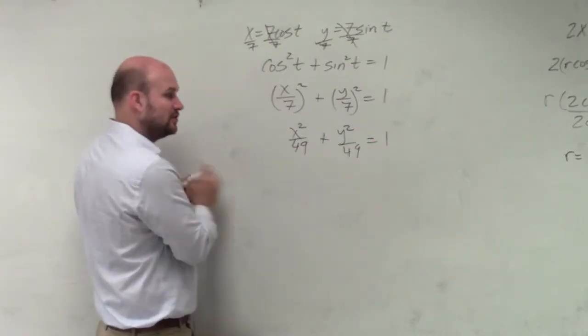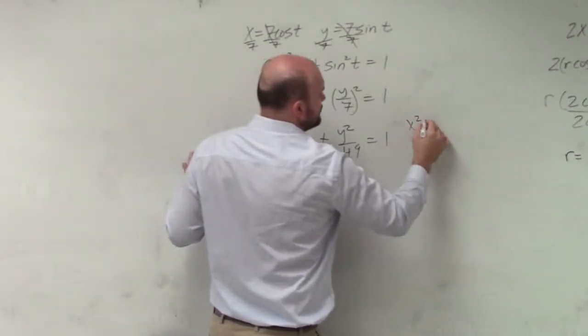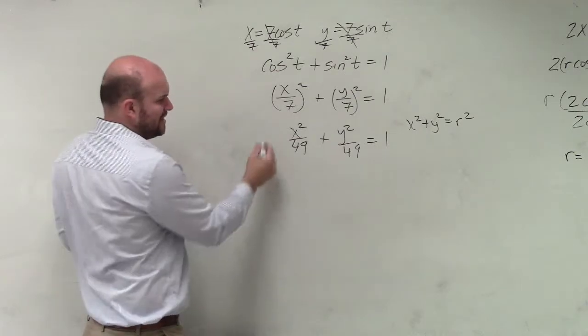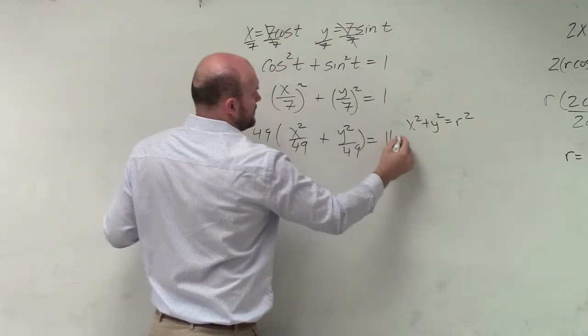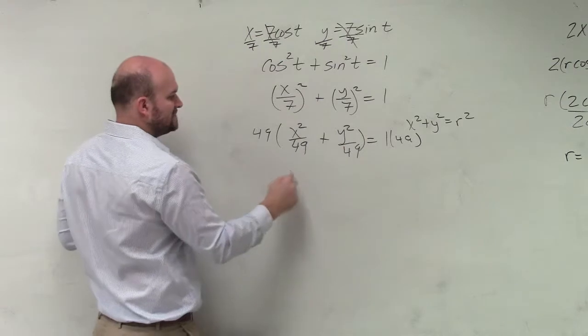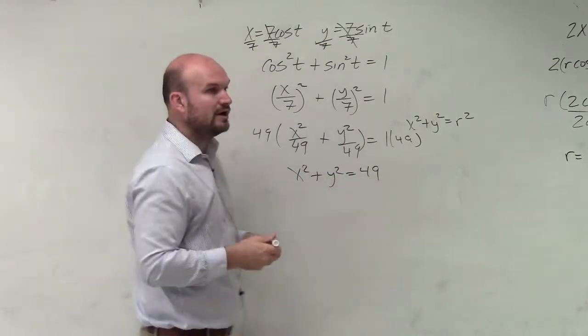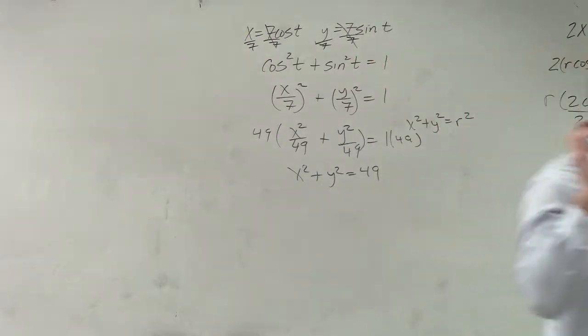However, our equation of a circle, if you guys remember, was x squared plus y squared equals r squared. So we should write it in that format, at least get used to it, because next chapter we're going to be doing this. So I multiply by 49 on both sides and I get x squared plus y squared equals 49. And therefore, I know my radius is going to be equal to 7.